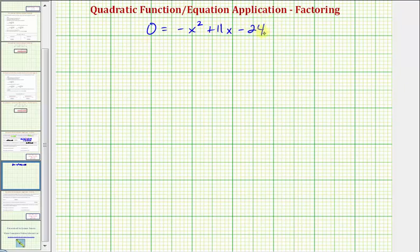Whenever factoring, we do want the leading coefficient to be positive. So we can either multiply both sides of the equation by negative one, or factor out negative one. Let's factor out our negative one, which is going to change the sign of each term. We'd have positive x² - 11x + 24. Notice how we distribute negative one, we have the same signs we had above.